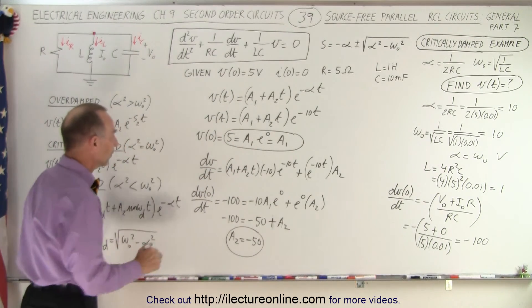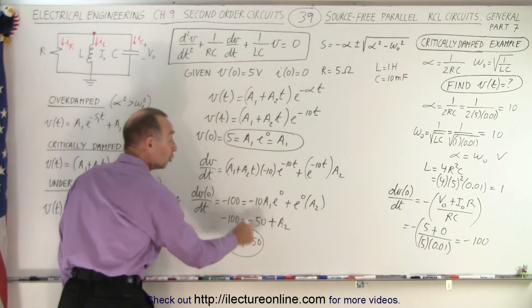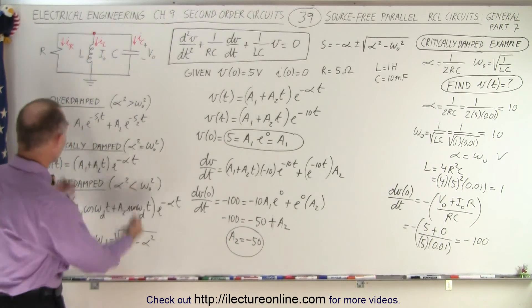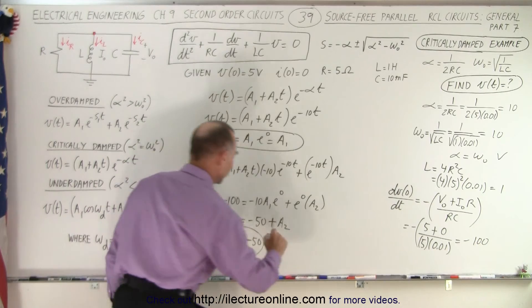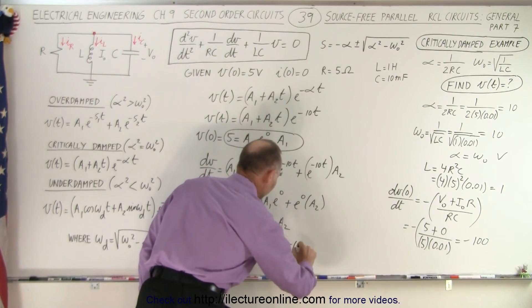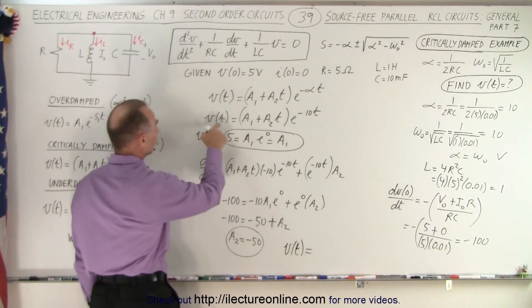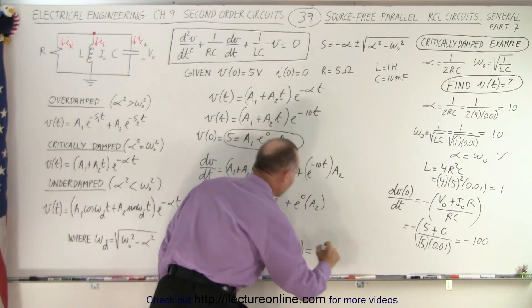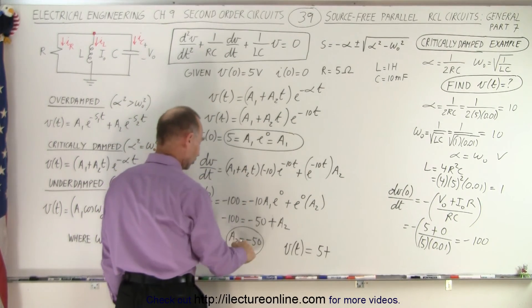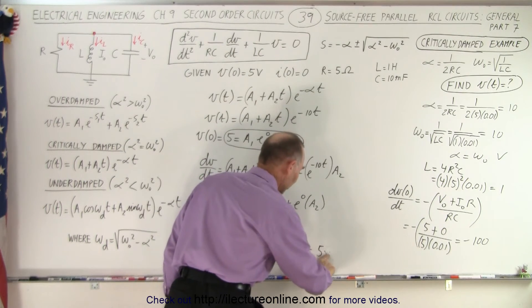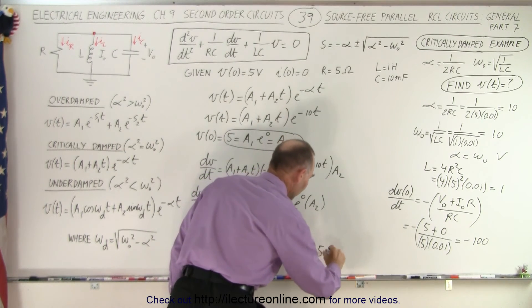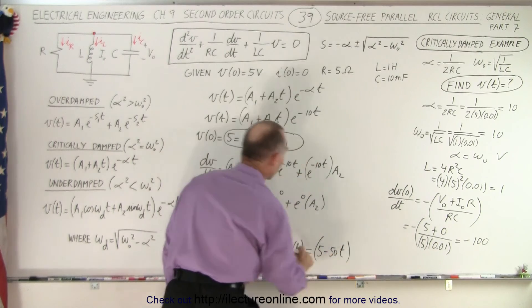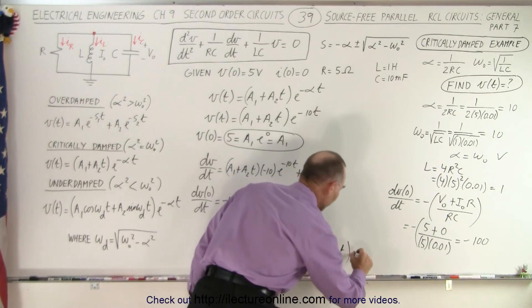So now we have both A1 which is 5 and A2 which is minus 50 we can now plug it into our equation and now we can say that voltage as a function of time is equal to A1 which is 5 plus A2 which is a minus 50 so this becomes a minus, minus 50T multiplied times E to the minus 10T.